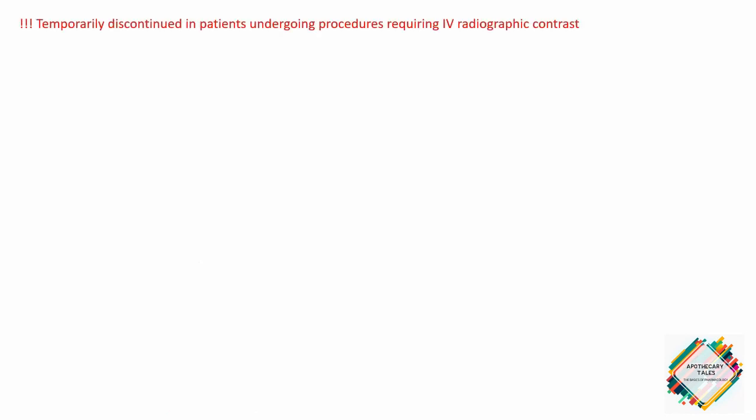The use of metformin is temporarily discontinued in patients undergoing procedures requiring IV radiographic contrast. This is because IV radiographic contrast could lead to an acute decline in renal function. Since metformin's primary route of elimination is via the kidneys, when there is an acute decline in renal function the elimination of metformin is reduced, more metformin accumulates in the body, and this could lead to lactic acidosis.